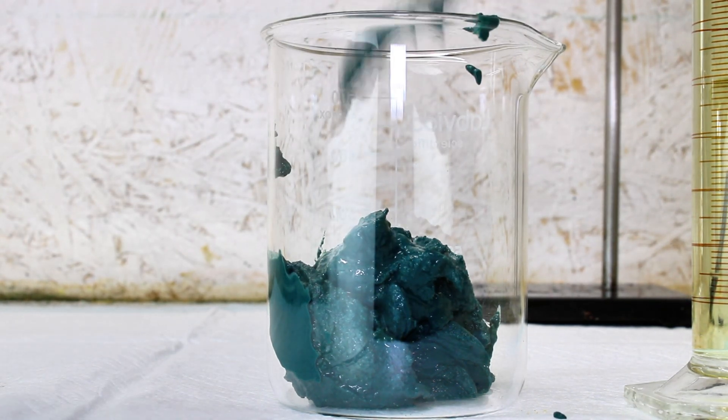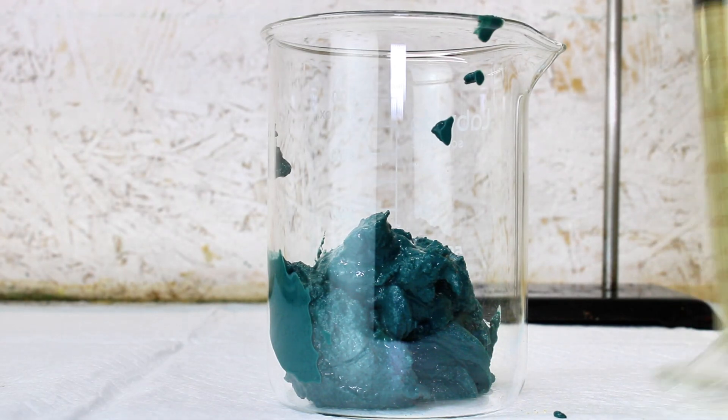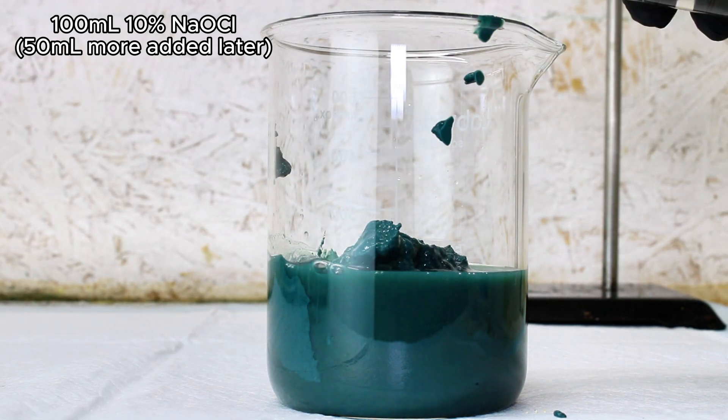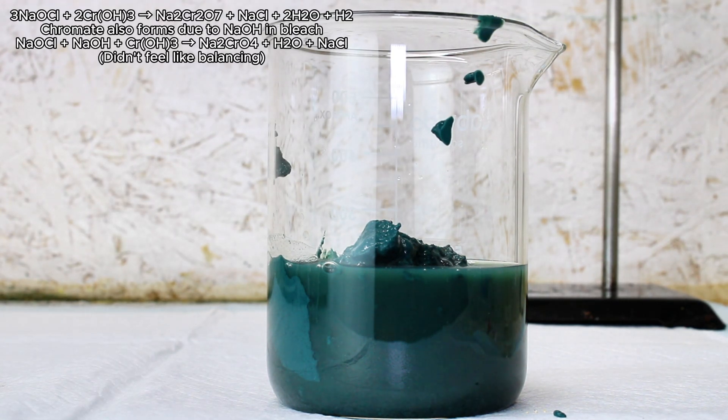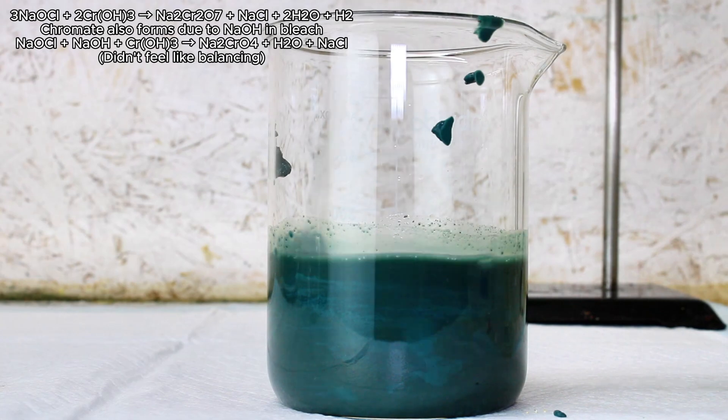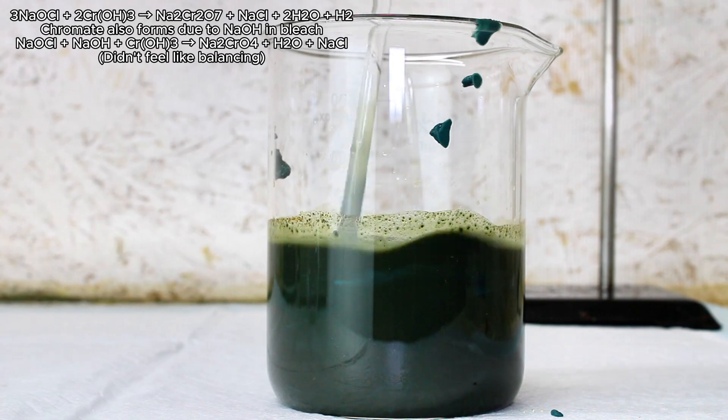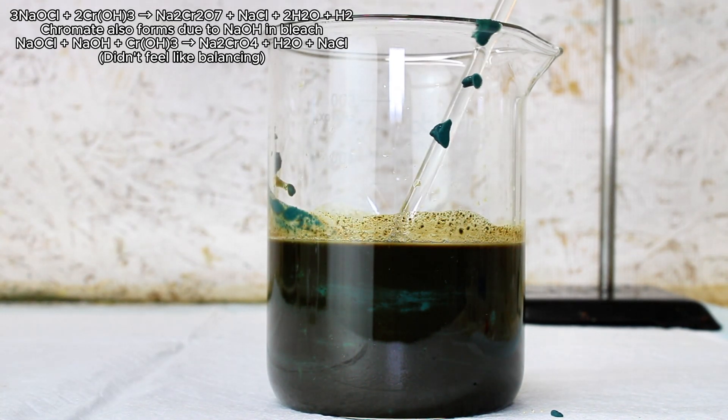In any case, my next step was to add about 100 milliliters of a 10% sodium hypochlorite bleach solution and give it a good stir. Sodium hypochlorite is an extremely strong oxidizer for how weirdly readily available it is, and it will easily oxidize the chromium hydroxide to sodium dichromate and sodium chromate.